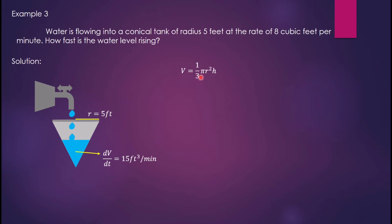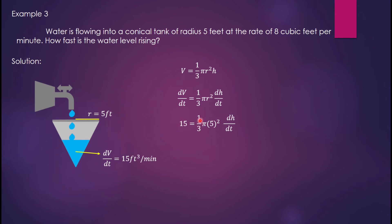Using the volume formula of a cone: V equals one-third pi r squared times h. Differentiating: dV over dt equals one-third pi r squared times dh over dt. Substituting the value of r equals 5 and dV over dt equals 15: 15 equals one-third pi times 5 squared times dh over dt. Solving, dh over dt equals 0.191 feet per minute. That is the rate at which the water level rises.